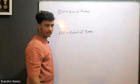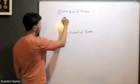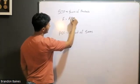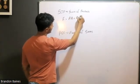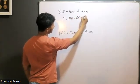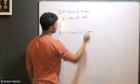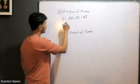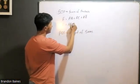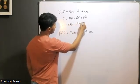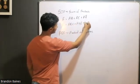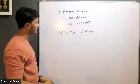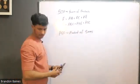We are going to talk about a Boolean expression. For example, F equals AB plus AC plus AB̄. And another example: F equals ABC plus ABC̄ plus AB̄C.